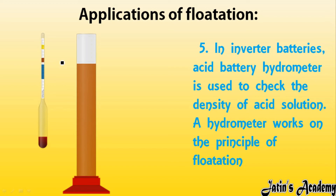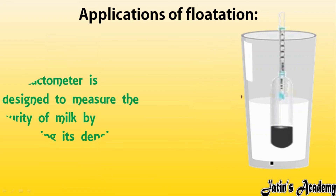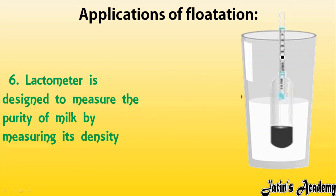The fifth application is the hydrometer, used in inverter acid batteries to check the density of the acid solution. The hydrometer works on the principle of flotation — it sinks when it has more density than the liquid and floats when it has less density. The sixth application is the lactometer, an instrument used to measure the purity of milk. It also works on the principle of flotation and density to determine whether milk is denser or less dense.